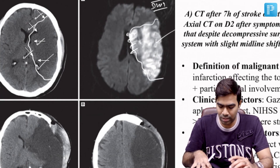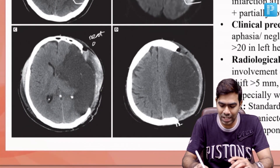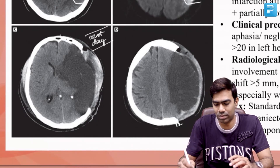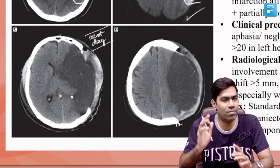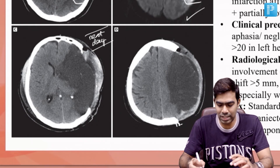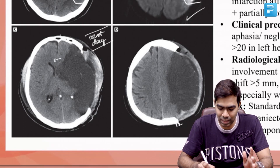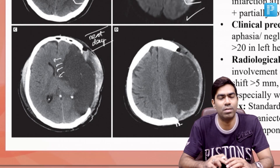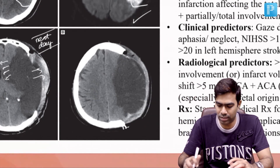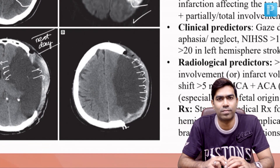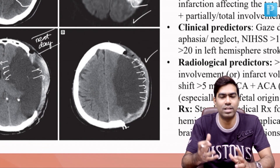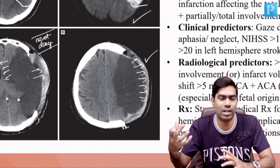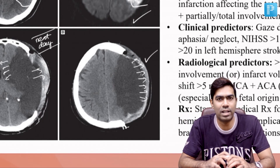This CT was taken the next day after hemicraniectomy, as this patient was taken for decompressive hemicraniectomy anticipating herniation. Even after hemicraniectomy, there is significant mass effect with some midline shift, but there is an outward movement of the edematous tissue. This is exactly why we perform hemicraniectomy — to allow the edematous brain tissue to expand outward rather than inward.